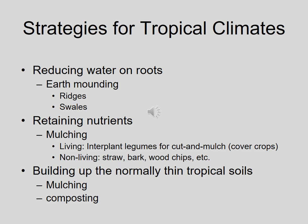In tropical climates, nutrients cycle so quickly due to humidity, warmth, and rain that there's a lot of decomposition. Nutrients get sucked up by plants quickly and soils tend to be nutrient poor, so you must keep enriching nutrient levels. Mulching — adding lots of living and organic mulches — helps, and also protects soil from erosion by creating a protective layer against heavy rain. Living mulches like legumes enrich the soil with nitrogen; use them as a cover crop, then chop them down to decompose as mulch.